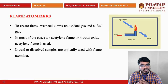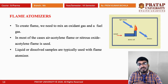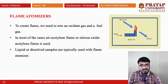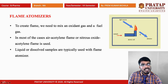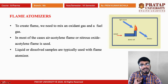The flame atomizer is mainly used to create a flame. We need to mix an oxygen gas and a fuel gas. In most cases, an air-acetylene flame or nitrous oxide-acetylene flame is used. Sometimes liquid or dissolved samples are also used with flame atomizers. Here the hollow cathode lamp is the light source. The sample vaporizes and then moves to the atomic cell where it produces a gas flame. The light passes through the flame where we have the excited sample cell, and that signal travels to the detectors.